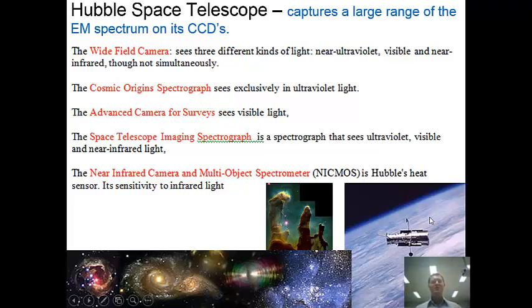CCDs are also used on telescopes. So the Hubble Space Telescope as an example has a number of CCDs on board, each one designed to look at different areas of the electromagnetic spectrum and therefore to be able to tell us different information about the universe around us. So there's some uses.